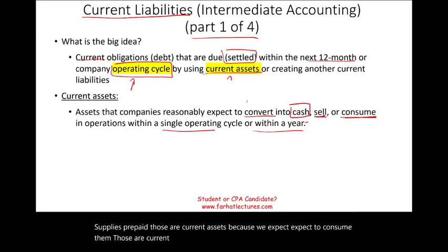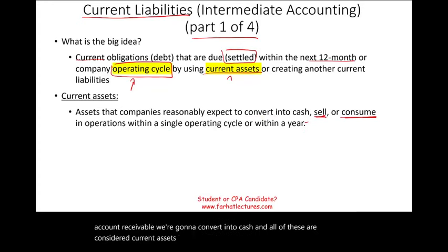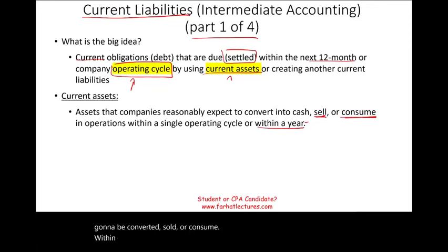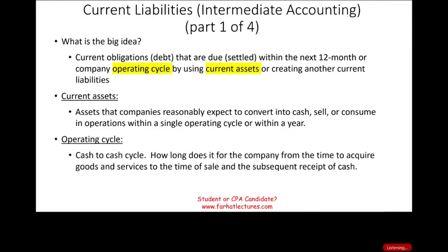Consider accounts receivable — we are going to convert that into cash. All of these are considered current assets because they are either cash themselves, or they will be converted, sold, or consumed within one year or the company's operating cycle. So what is the operating cycle?